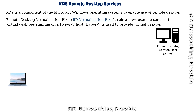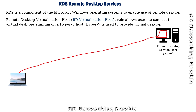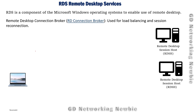The third role is Remote Desktop Virtualization Host. If we enable this role, it allows users to connect with virtual desktops running on a Hyper-V host. Hyper-V is used to provide virtual desktops — that is, users get access to a virtual computer which they can access remotely. That is Remote Desktop Virtualization Host.